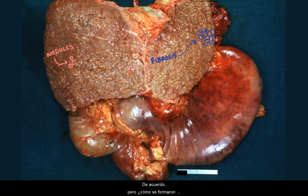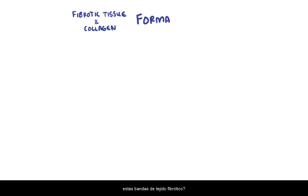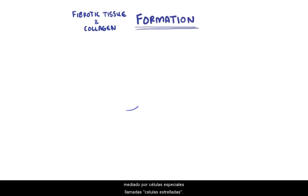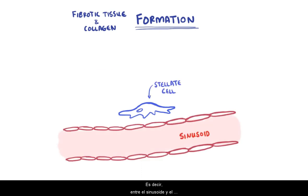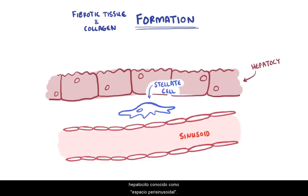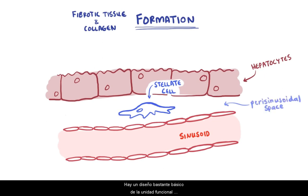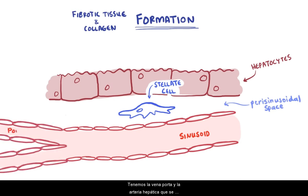But how do these bands of fibrotic tissue form? Fibrosis is a process mediated by special cells called stellate cells that sit between the sinusoid and hepatocyte, in what's known as the parasinusoidal space. Here's a basic layout of the functional unit of the liver: the portal vein and the hepatic artery combine into a sinusoid, which then goes into the central vein.